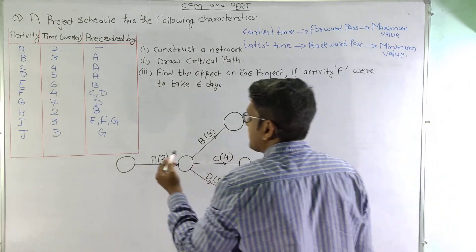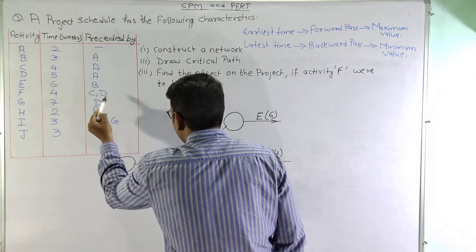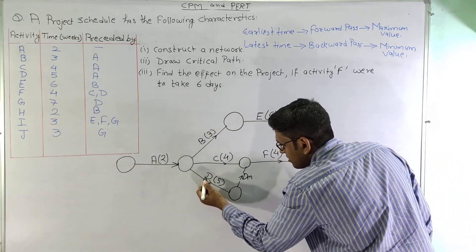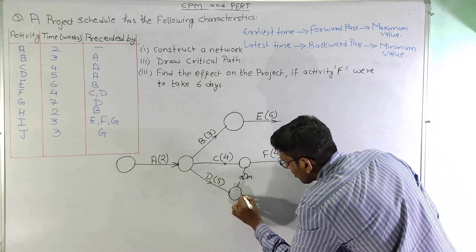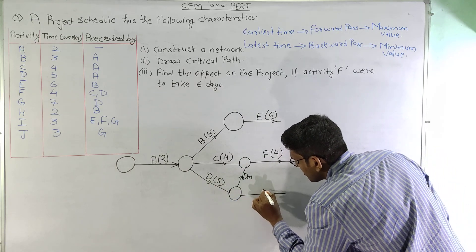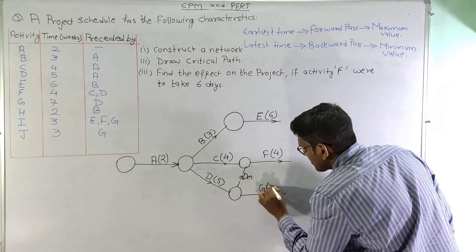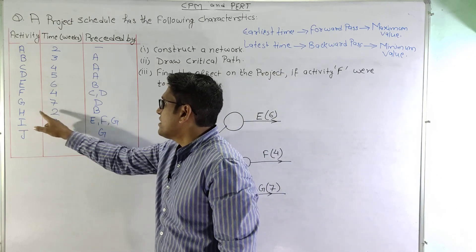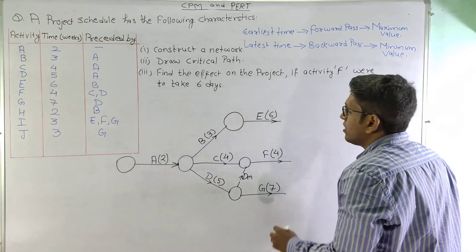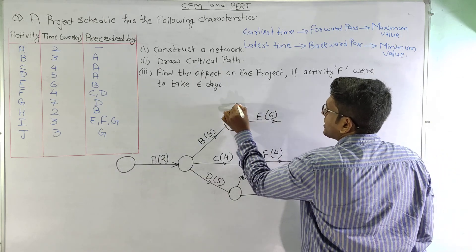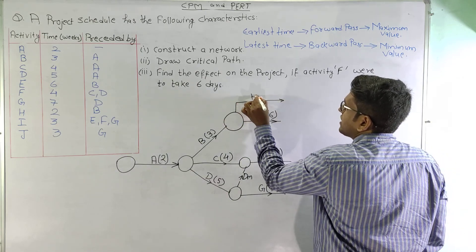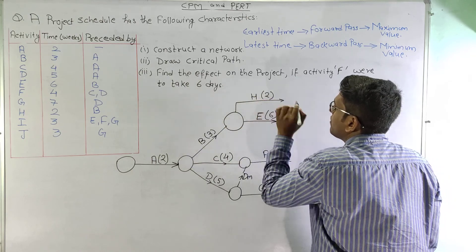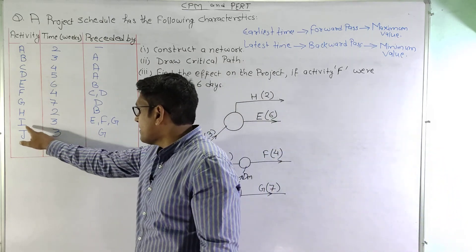Moving on to activity G, activity G depends on activity D only. At the node where only activity D is completed, we can start activity G. Activity G consumes 7 weeks. Activity H is preceded by activity B only, so we draw activity H from the B-end node. Activity H is preceded by activity B only.